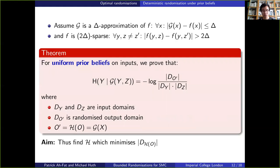So let's first discuss the case where we had uniform prior beliefs on the inputs. If we assume g to be a delta approximation of f and f to be 2 delta sparse, which we recall the definition above, then we show that the entropy to be maximized can be expressed as a function of the cardinality of the inputs and the output domains. The aim is thus to find an output randomization function h, which minimizes the number of different outputs.